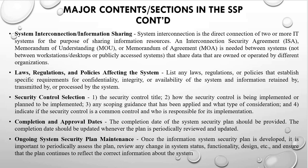The last section is ongoing system security plan maintenance. Once the information system security plan is developed, it is important to periodically assess the plan, review any changes in system status, functionality, and design, and ensure that the plan continues to reflect the correct information about the system. So these are the 15 major content sections in an SSP that you need to get familiar with as a compliance analyst.